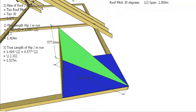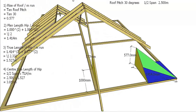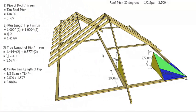So that means for every meter of run we have 1.527 meters of our hip. Now we know that formula, we can transfer that into the whole roof. We know our half span was 2.5, so we times that by 1.527 and it gives us a hip length of 3.818.